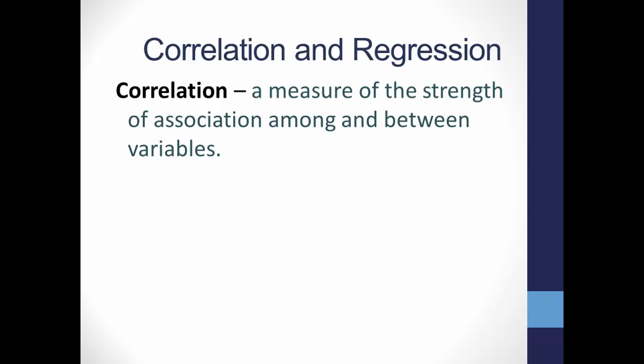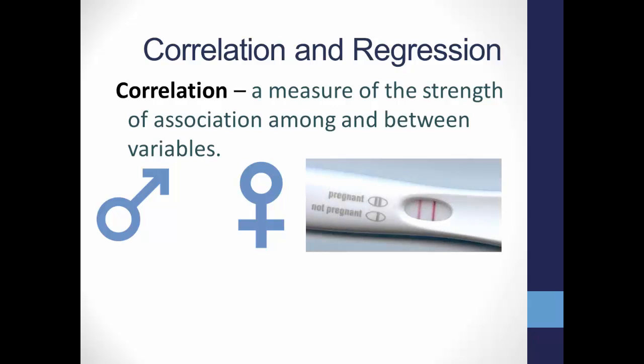You can do this with nominal-level variables, such as: is a person's sex related to or associated with or correlated with pregnancy? Now, being female, for example, would not cause you to become pregnant. The two variables are, however, strongly correlated. There is a relationship between them.